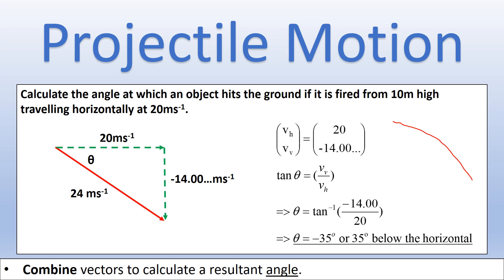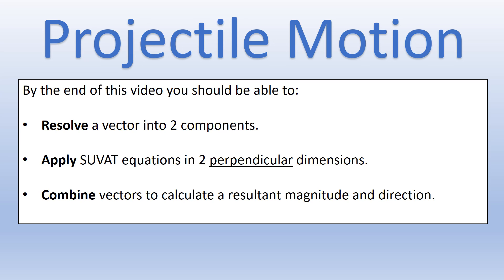Those are the key aspects of two-dimensional SUVAT. The main skills are: resolving a vector into two components using trigonometry, applying SUVAT in two perpendicular dimensions with horizontal acceleration equal to zero for projectile motion, and combining perpendicular components to find the resultant magnitude and direction. Thanks for watching — feel free to comment with any questions. These methods are similar to what you'll see in the mechanics section of A-level maths.